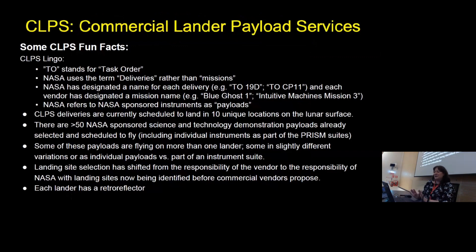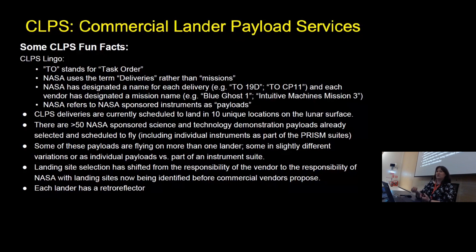For some of you that are not as familiar, I'll start with a little intro, especially some of the lingo you'll see on all my slides. TO stands for task order. NASA uses the term deliveries because NASA-sponsored payloads are being delivered to the surface, and then the mission name is created by the vendor, the CLPS commercial vendor. So NASA has a designation for each delivery and then the commercial vendor creates a mission name. For example, task order 19D and Blue Ghost Mission 1 are the same thing. NASA refers to their sponsored instruments as payloads.